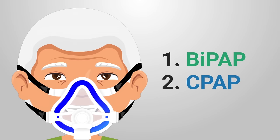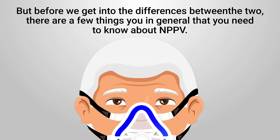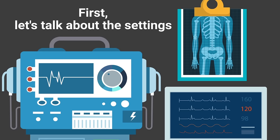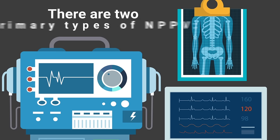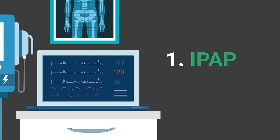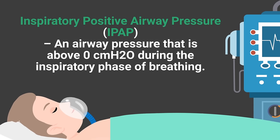Before we get into the differences between the two, there are a few things in general you need to know about non-invasive positive pressure ventilation. First, let's talk about the settings. In non-invasive ventilation there are two primary settings: IPAP and EPAP. IPAP stands for inspiratory positive airway pressure — this is an airway pressure that is above zero during the inspiratory phase of breathing.